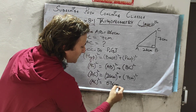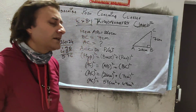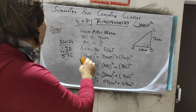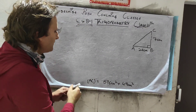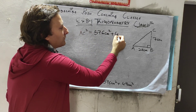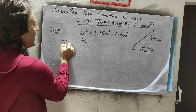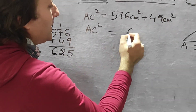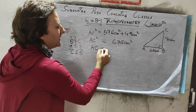24 multiplied by 24 gives 576 cm², and 7 multiplied by 7 gives 49 cm². So AC² = 576 + 49, and if we add 576 and 49 we get AC² = 625 cm².